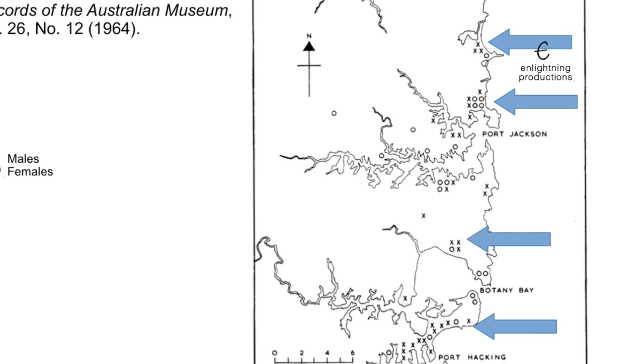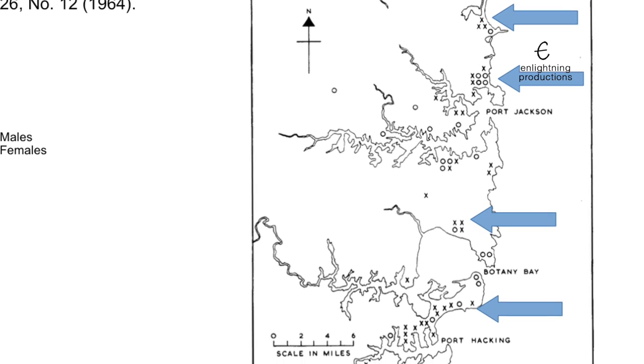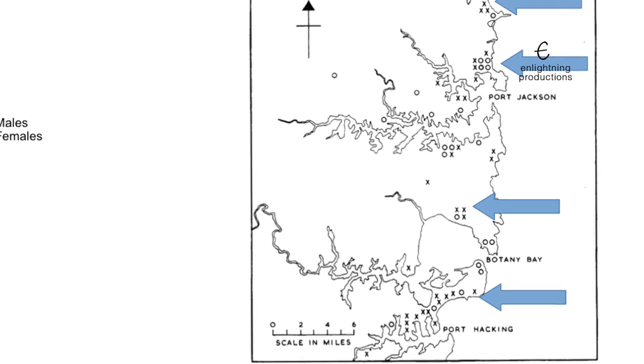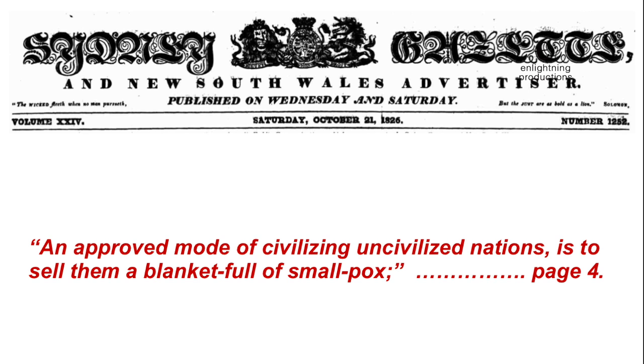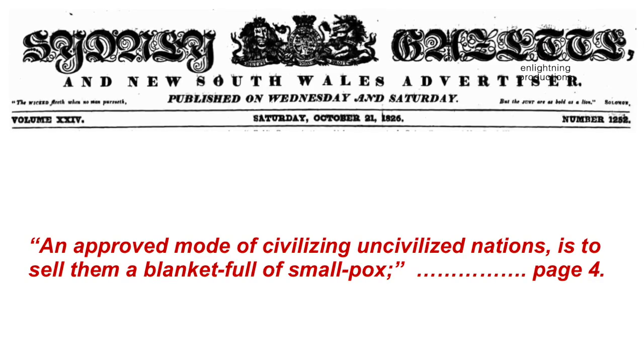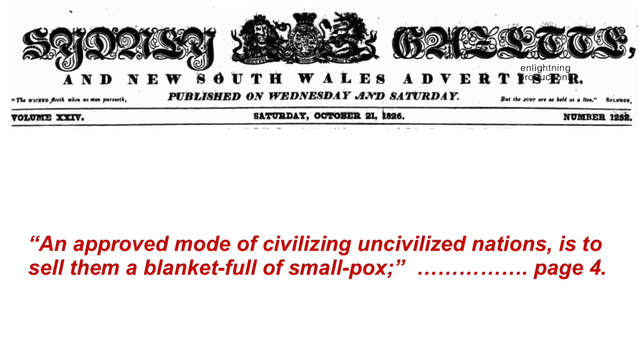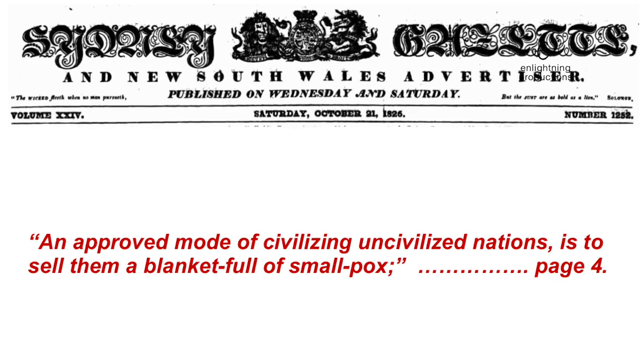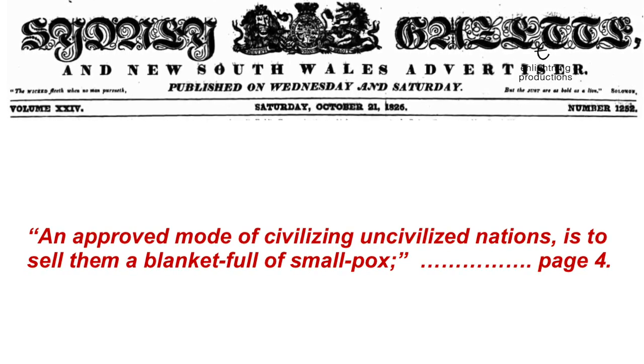We now need to consider who could have released smallpox and why. It should come as no surprise that the British released smallpox, as they had already used it against North American tribes on more than one occasion in the 1760s. While this tactic was never reported in official records, it certainly was recorded in British culture. In 1826, the Sydney Gazette referred to selling blankets full of smallpox to uncivilised nations. Using smallpox was also advocated by British Major Robert Duncan, who spent some time serving with the marines.